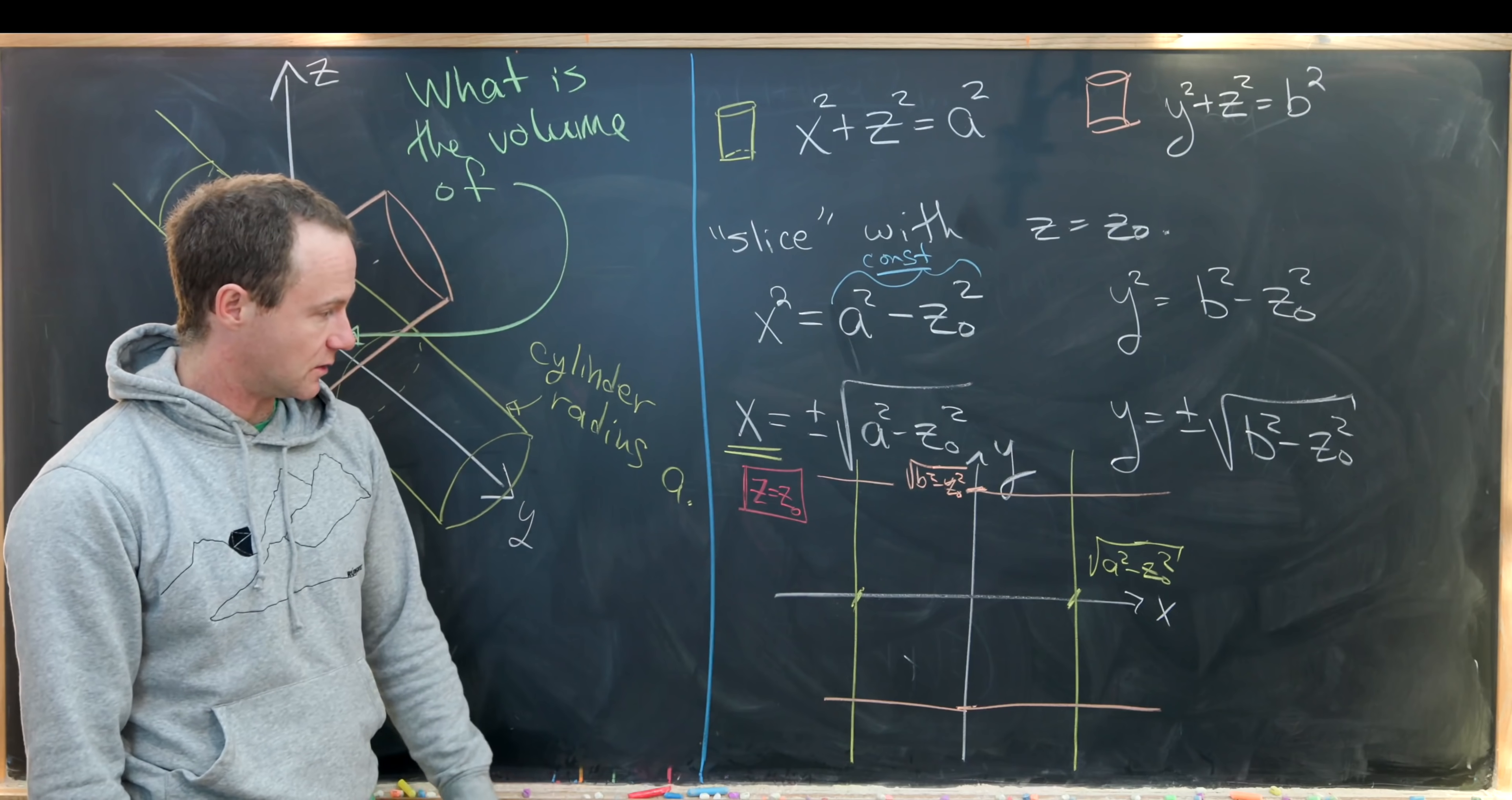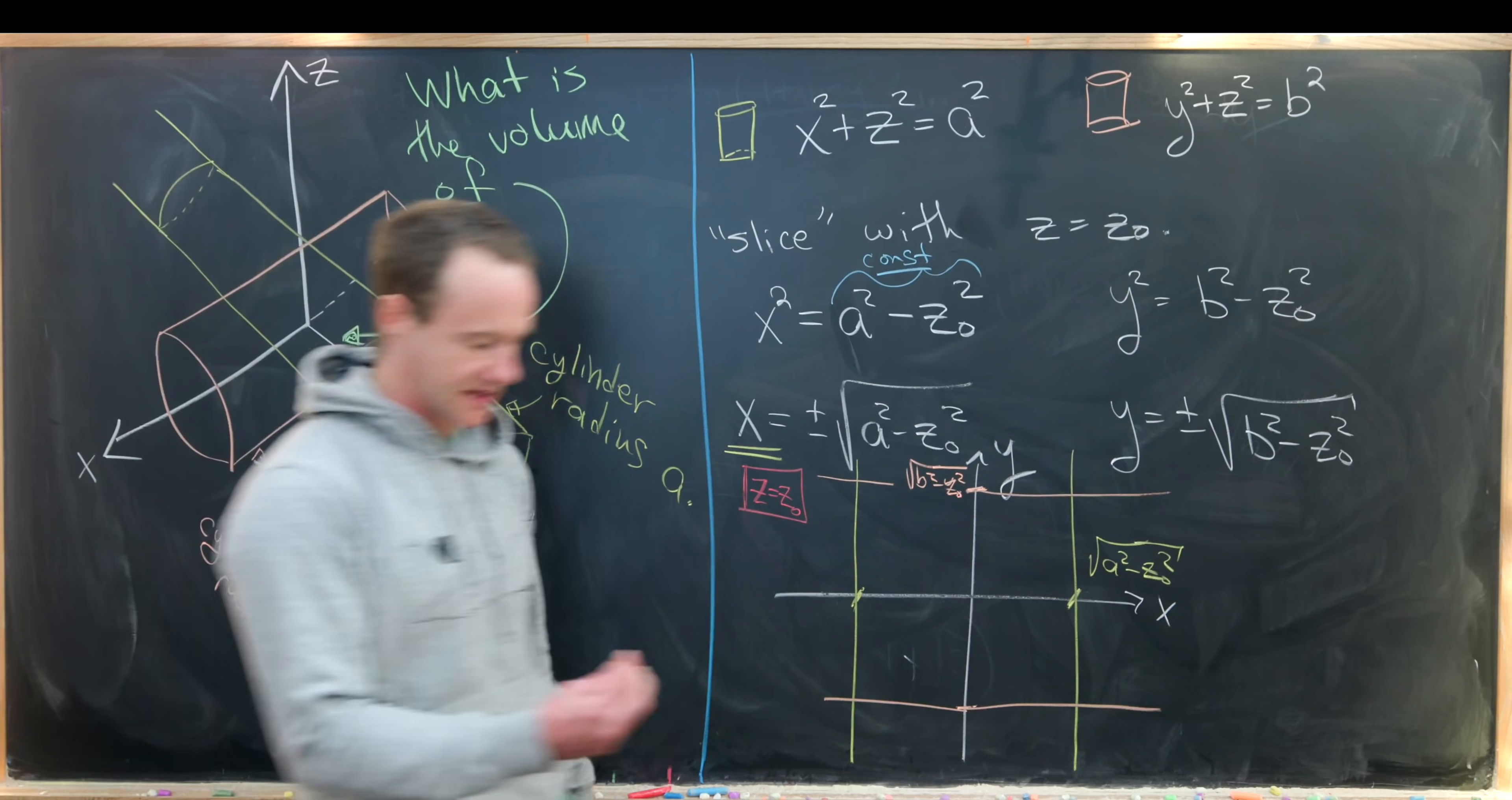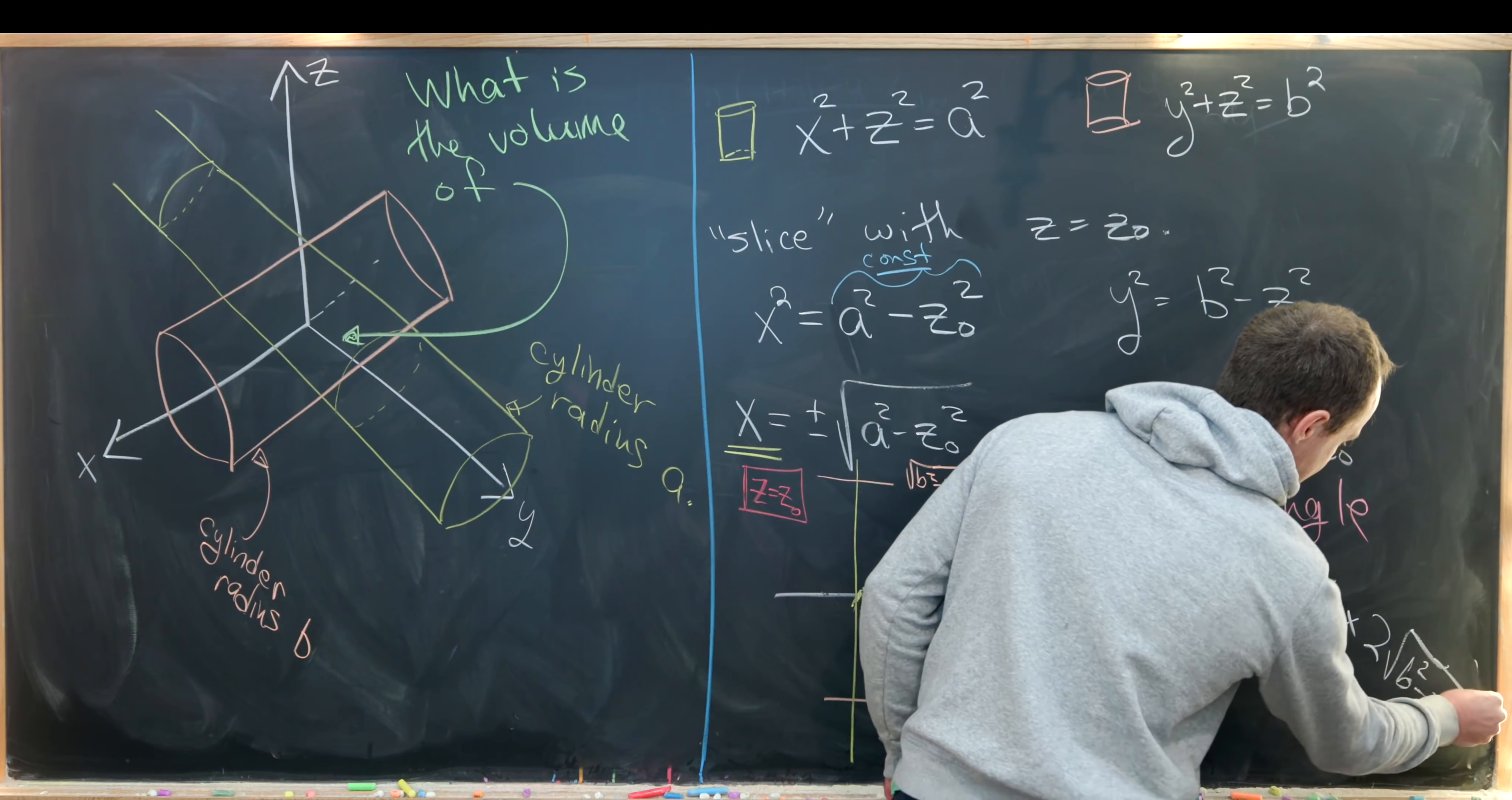The side length is 2 times the square root of a² - z₀² by 2 times that. 2 because we're going from negative that number to positive that number for the x and the y axis. So this is a rectangle that is 2√(a² - z₀²) by 2√(b² - z₀²).